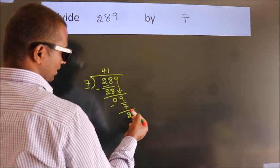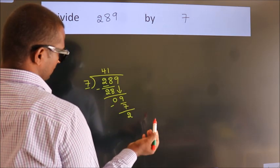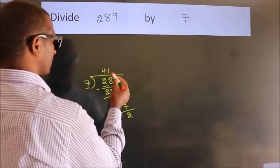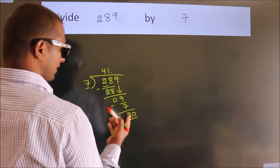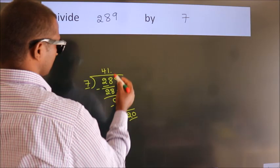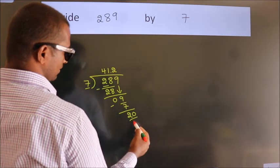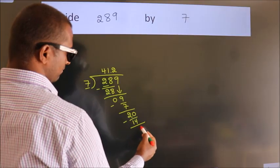We get 2. After this, no more numbers to bring down. So what we do is put a dot and take 0. So 20. A number close to 20 in the 7 table is 7 times 2 equals 14. Now we subtract. We get 6.